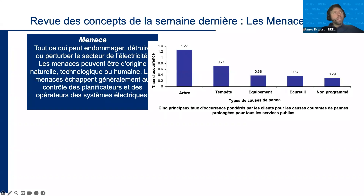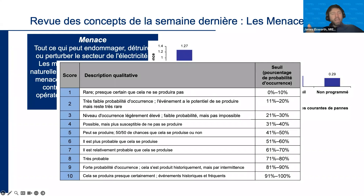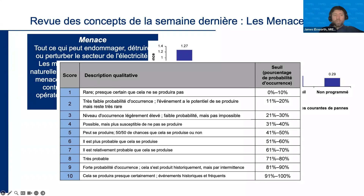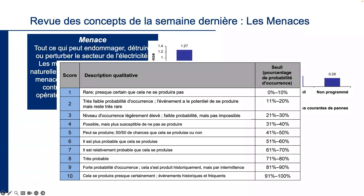There are different ways to score threats. You score threats based on the likelihood that they will happen, using a scale from one to ten — one where it's almost certain not to occur, to ten where it's almost certain to occur. For cyclones, for example, you can look at how often they've happened historically, but you also want to think about how often they're going to happen in the future.